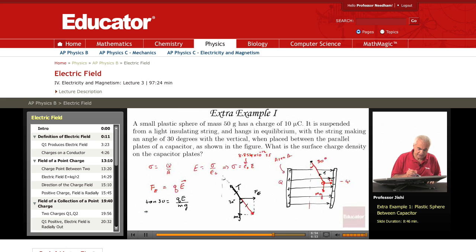So E is equal to M G tangent 30 over Q, and sigma is just epsilon 0 E. It's epsilon 0 M G tangent 30 over Q.